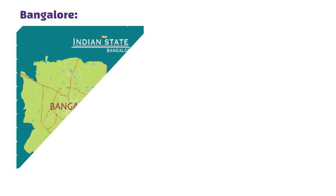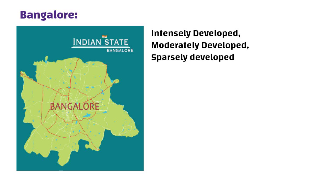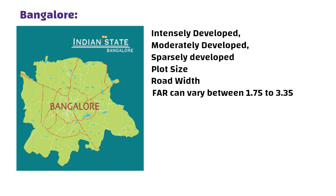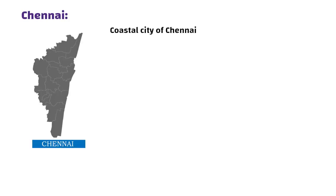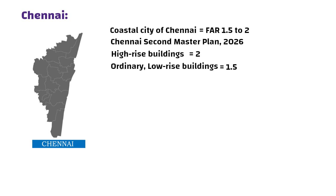Bangalore: Bangalore has three categories of localities — intensely developed, moderately developed, and sparsely developed. Depending on this category, plot size, and road width, the FAR can vary between 1.75 to 3.35. Chennai: The coastal city of Chennai sees the FAR value of 1.5 to 2 under the Chennai Second Master Plan 2026. A value of 2 is assigned to high rises and 1.5 to ordinary low-rise buildings.